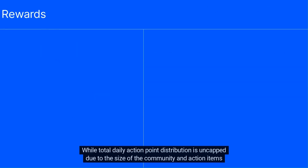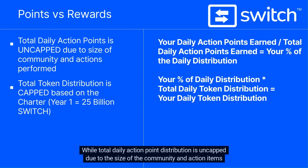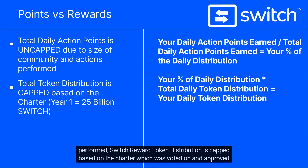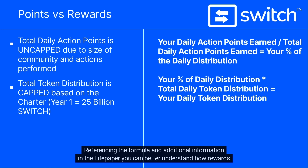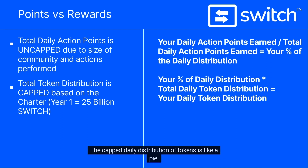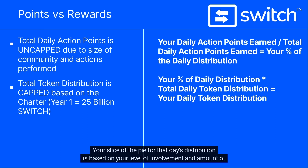While total daily action point distribution is uncapped due to the size of the community and action items performed, Switch reward token distribution is capped based on the charter, which was voted on and approved by node owners. The capped daily distribution of tokens is like a pie — the pie does not get any bigger, but is divided into slices. Your slice of the pie for that day's distribution is based on your level of involvement and amount of action points earned.